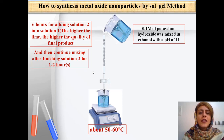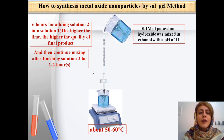The potassium hydroxide and ethanol mixture is prepared until a pH value of 11 is obtained. This solution is then added dropwise to the zinc acetate dehydrate solution, and the dropwise addition takes about 6 hours.